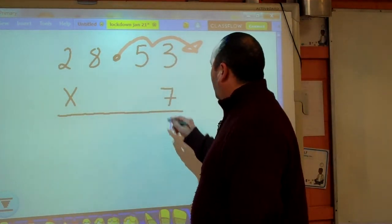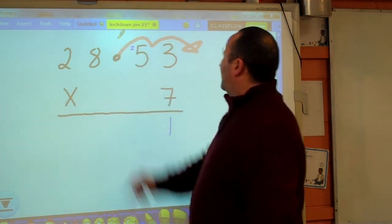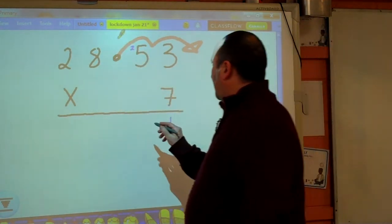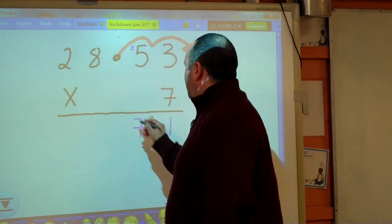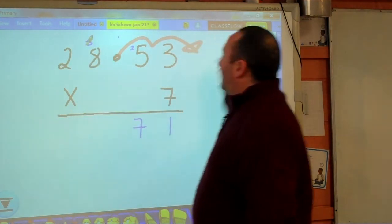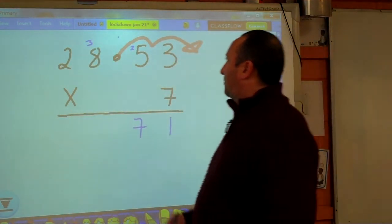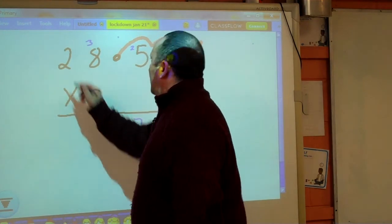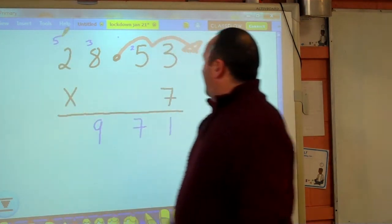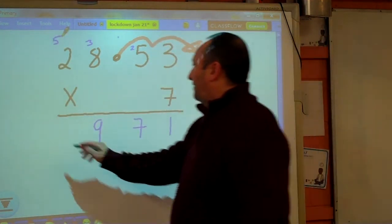7 3's are 21. Put down your 1, bring over your 2. 7 5's are 35, plus 2 is 37. Put down your 7, bring over your 3. 7 8's are 56, plus 3 is 59. Put down your 9, bring over your 5. And 7 2's are 14, plus 5 is 19.